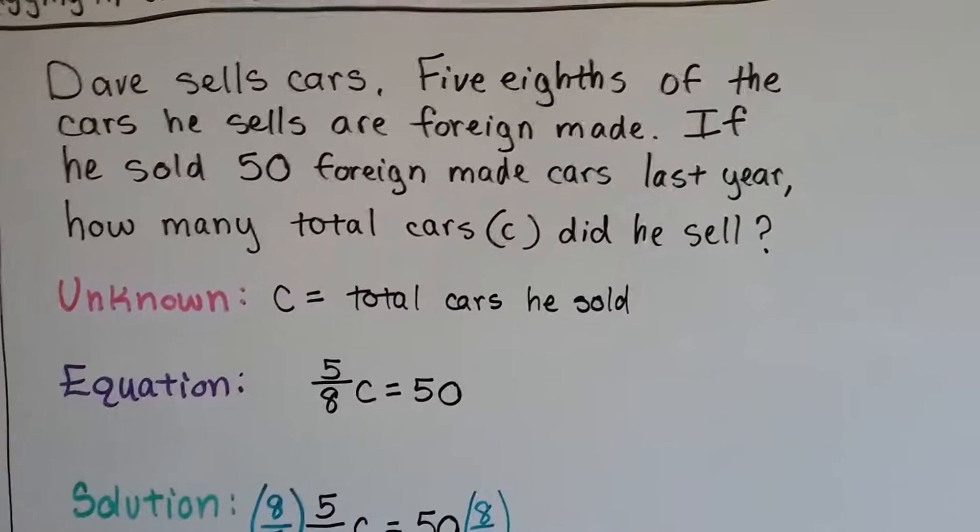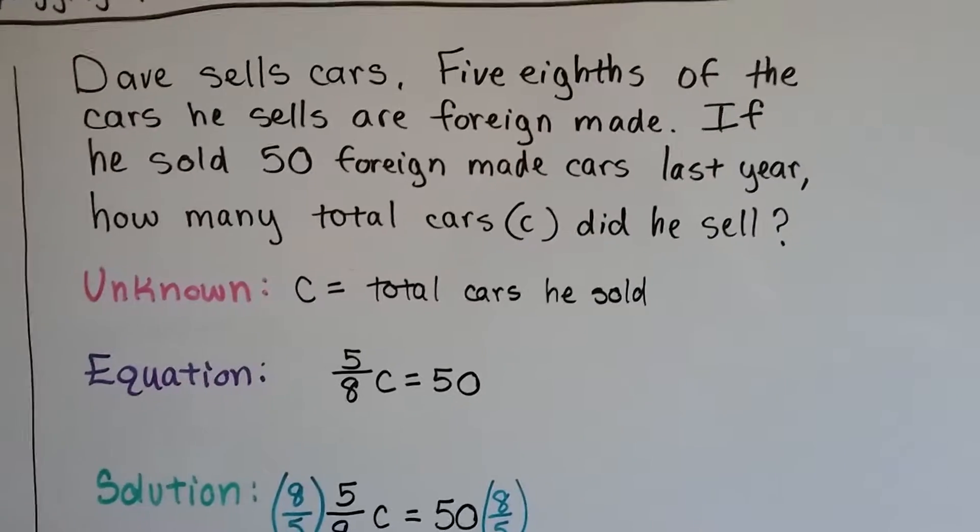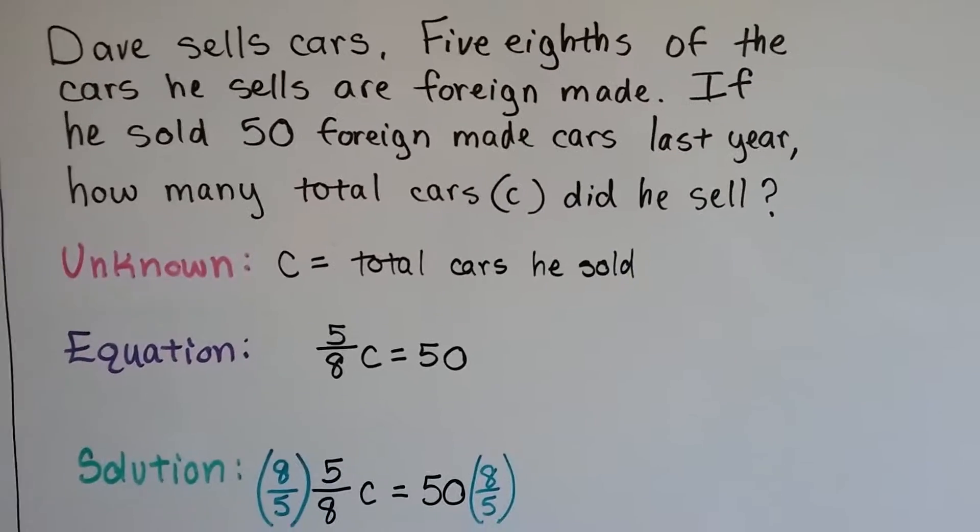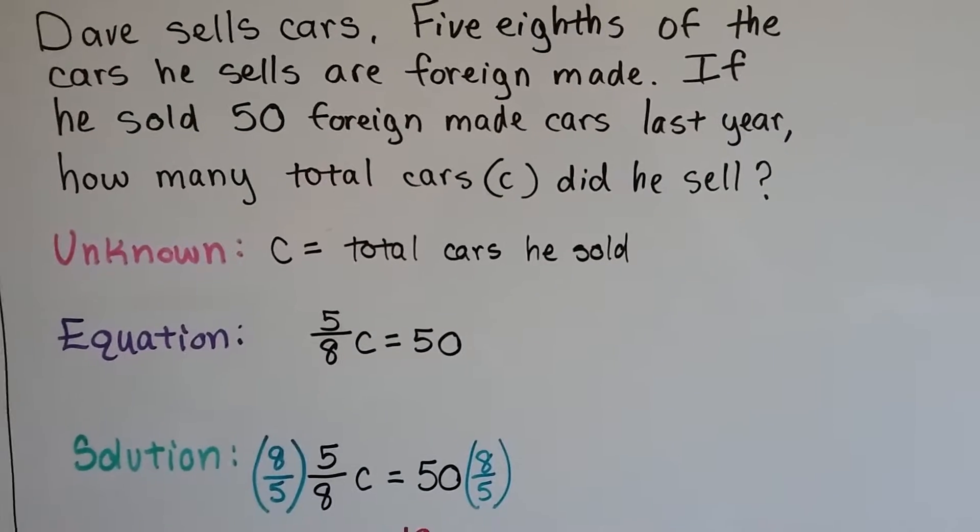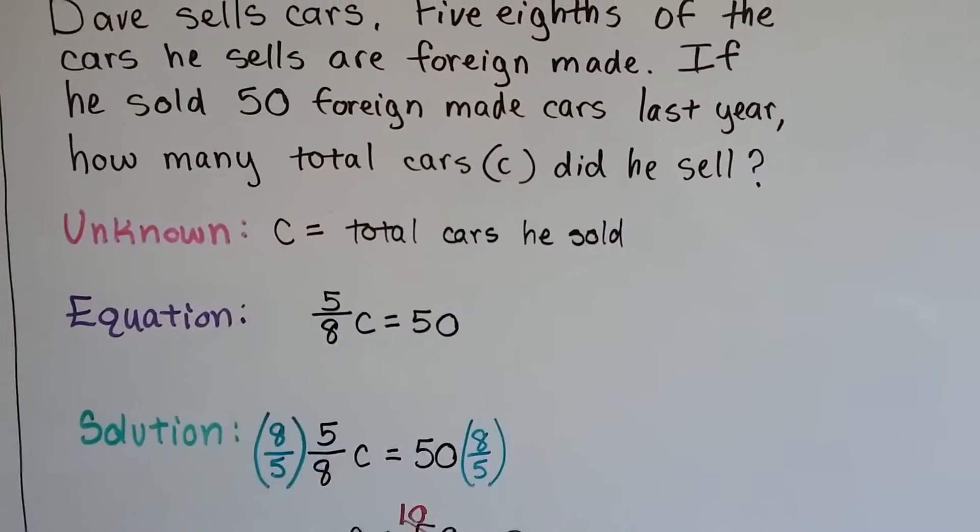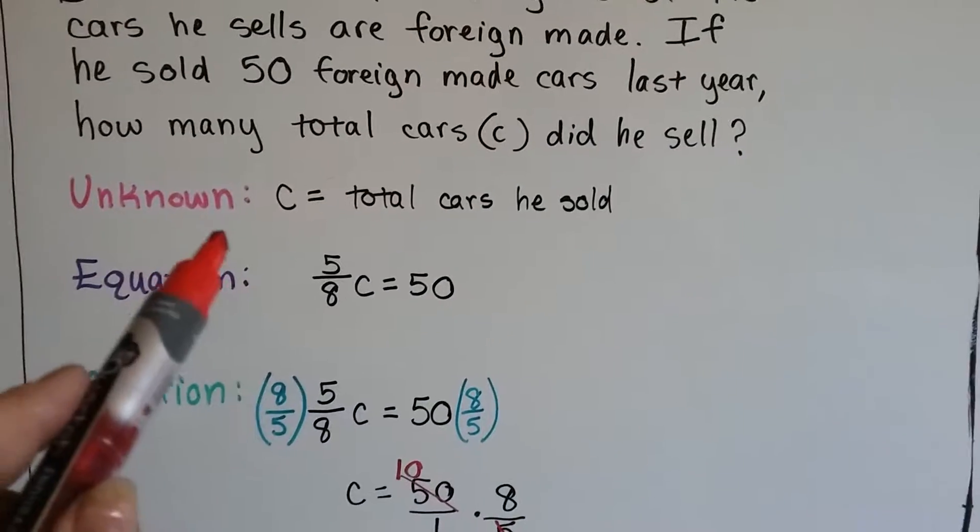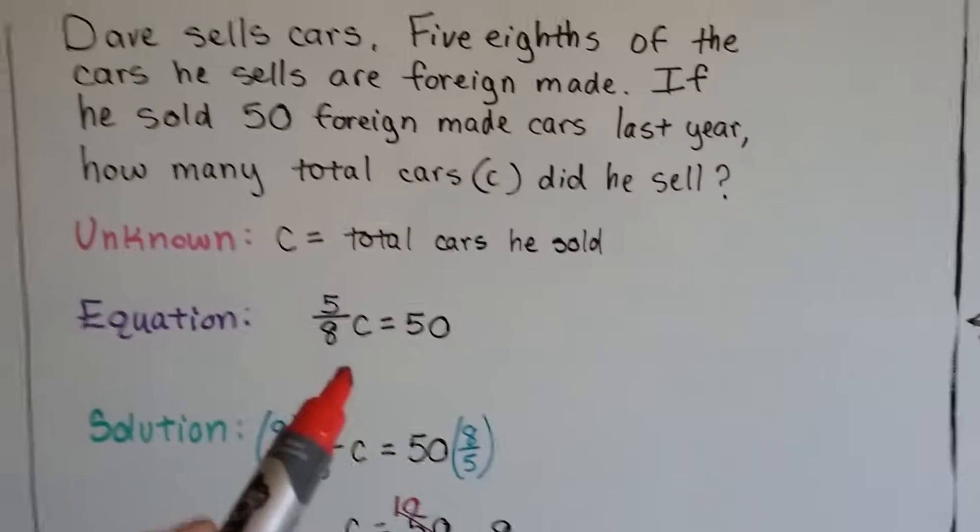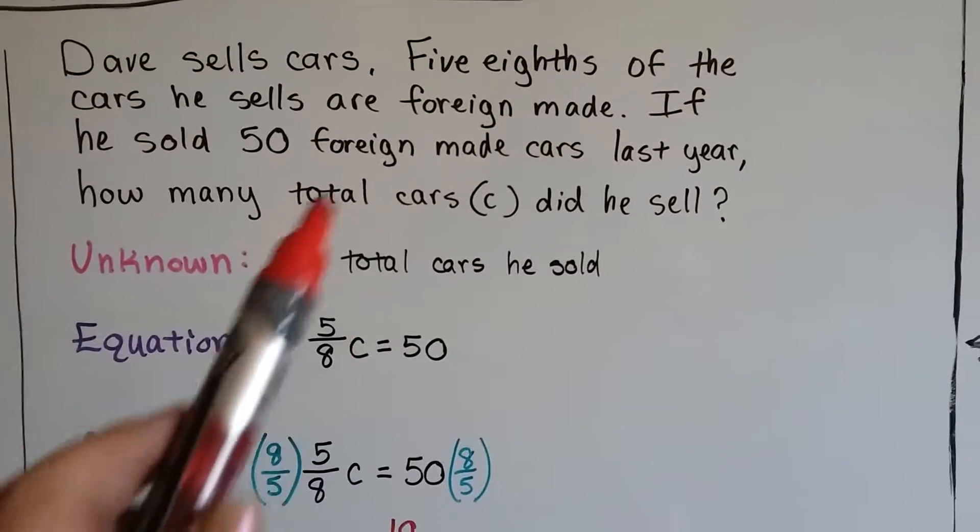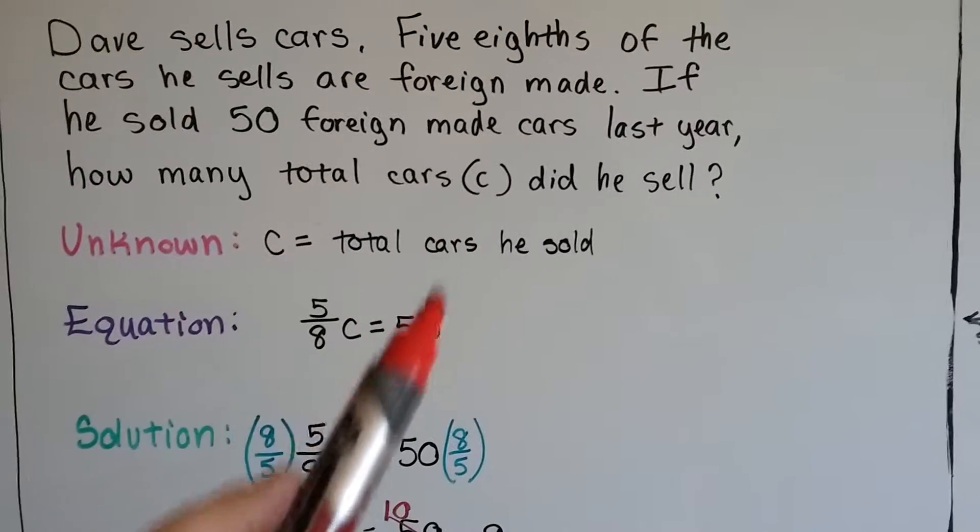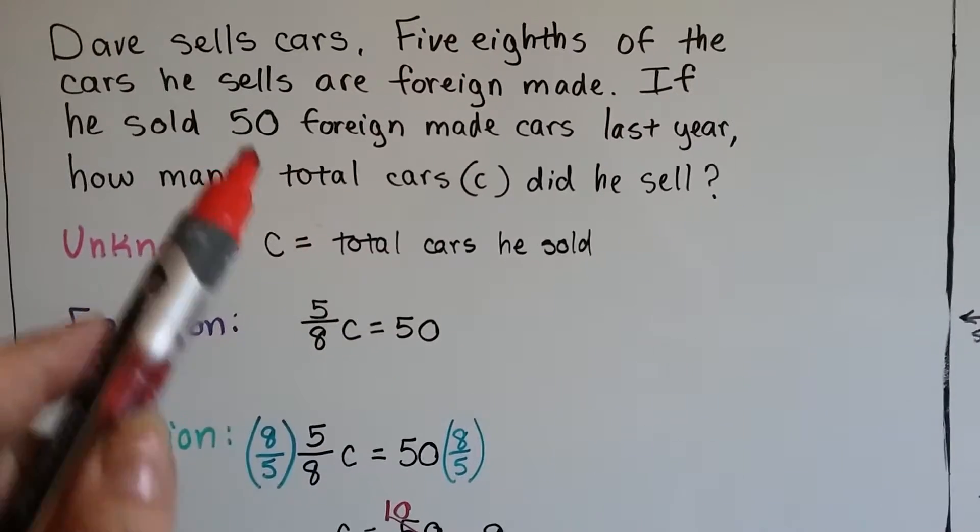Dave sells cars. Five-eighths of the cars he sells are foreign-made. If he sold 50 foreign-made cars last year, how many total cars, C, did he sell? So we're representing total cars with the letter C as the variable. That's our unknown. Our equation is going to be - do you see the fraction five-eighths even though it's in words? Five-eighths C is going to equal the 50.